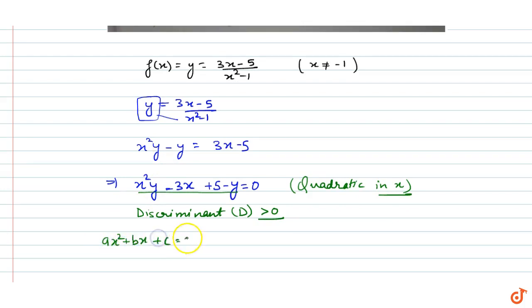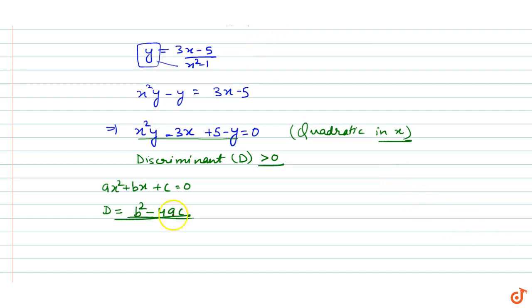This is a quadratic ax² + bx + c = 0. The discriminant is b² - 4ac. Using this formula, we get discriminant ≥ 0, which means (-3)² - 4(y)(5 - y) must be greater than 0.